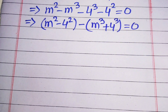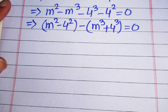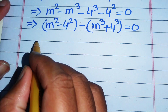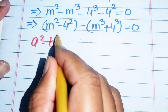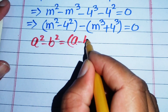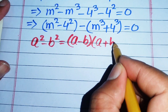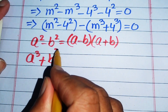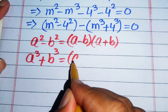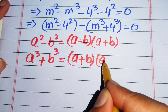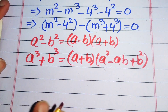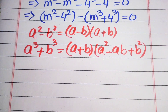Here we need two nice formulas: the square identity and the cubic identity. The square identity states a squared minus b squared equals a minus b times a plus b. The cubic identity states a cubed plus b cubed equals a plus b times a squared minus ab plus b squared. We need these two formulas to solve the above equation.